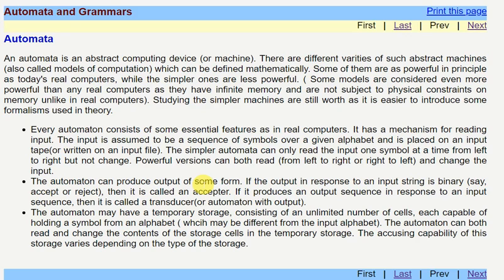The automated machine can have some temporary storage with unlimited number of cells, each having the capability of holding a symbol from an alphabet. The automaton can both read and change the contents of storage cells in the temporary storage.